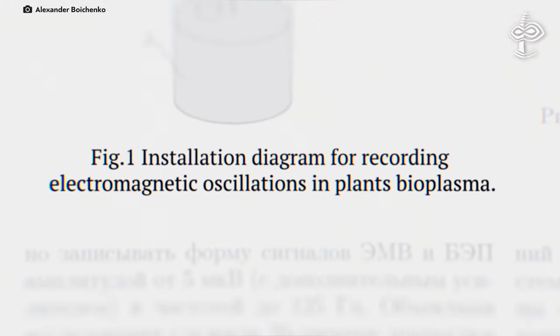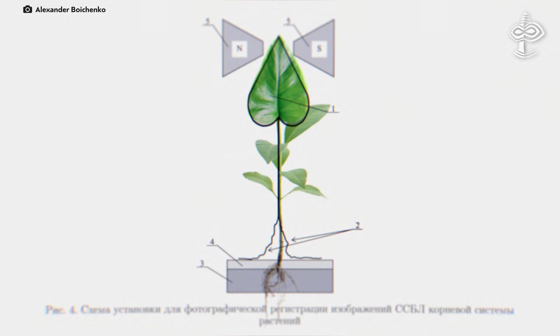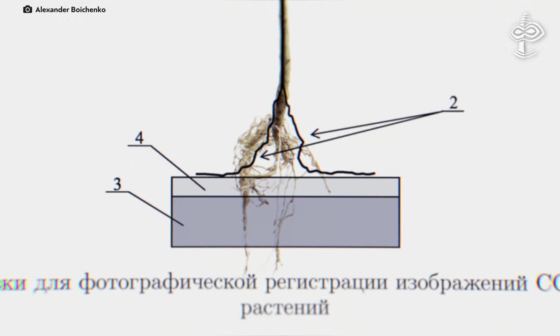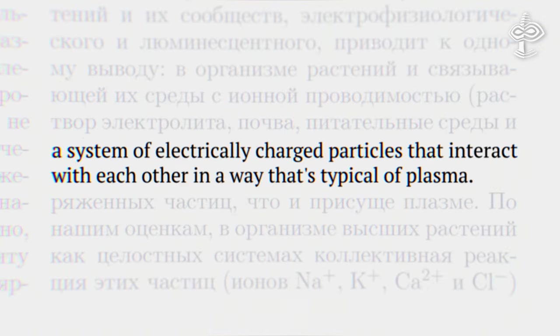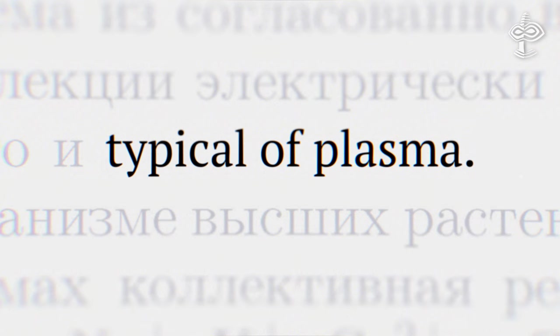To sum it up, he found that plants and their surrounding media with ionic conductivity, like electrolyte solution, soil, or nutrient media, contain a system of electrically charged particles that interact with each other in a way that's typical of plasma.